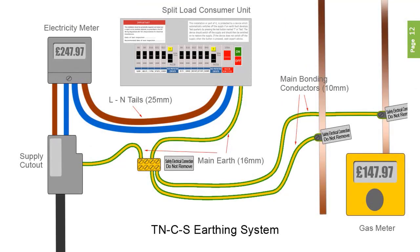TN-CS means terra-neutral combined and then separate. So it's a combined earth-neutral conductor coming into the installation from the distributor, which is then split into a separate neutral and earth conductor on the consumer's side. Quite often referred to as a PME — Protective Multiple Earthing Supply — as the incoming distributor's neutral earth conductor is earthed at multiple points along its length as a safety feature in case of a break of the earth-neutral conductor.